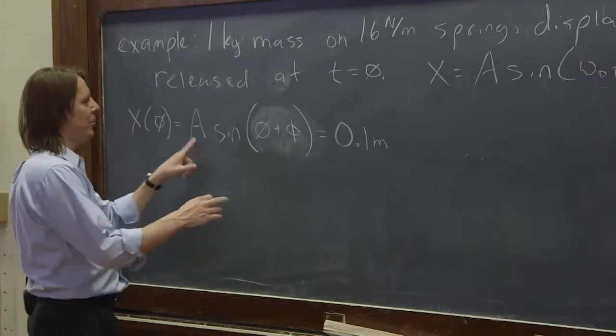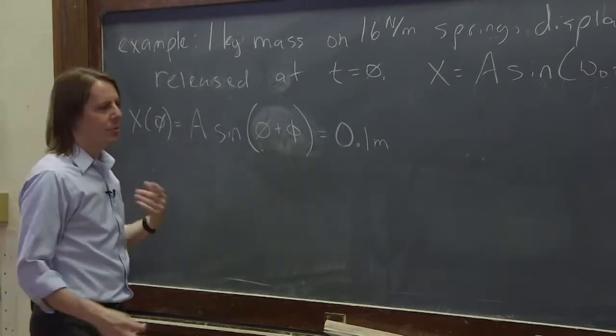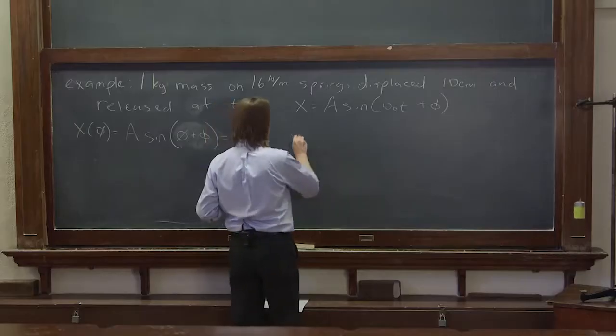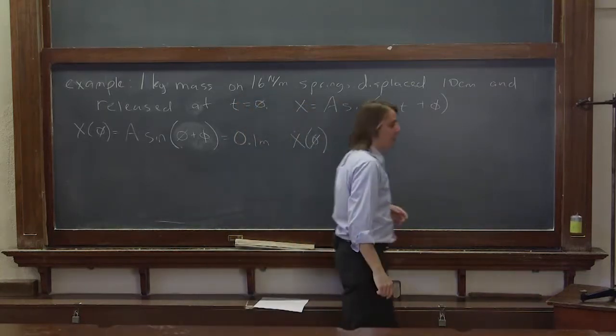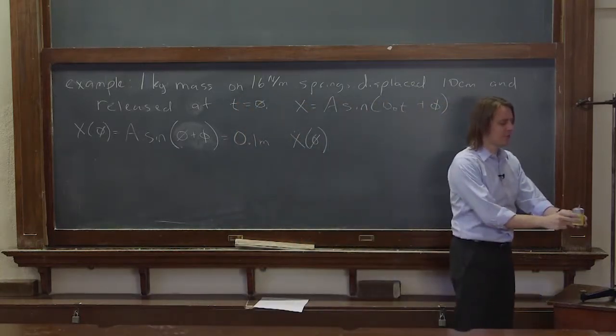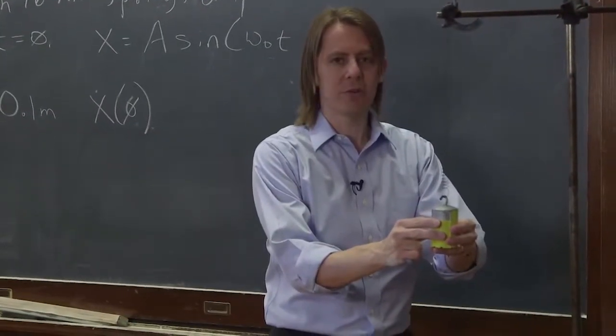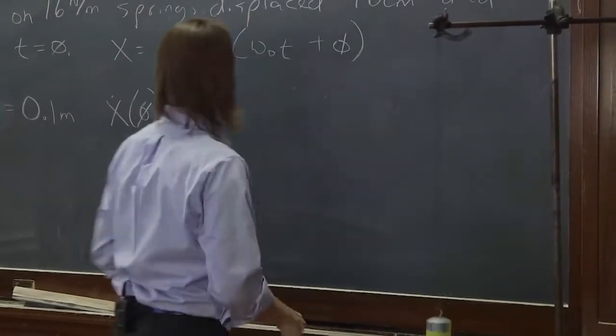That doesn't really help us solve anything because it has both A and phi in it. So we also need to use the velocity. In addition to knowing the position at time equals zero, we know that it was released from rest. So we know the velocity at time equals zero.